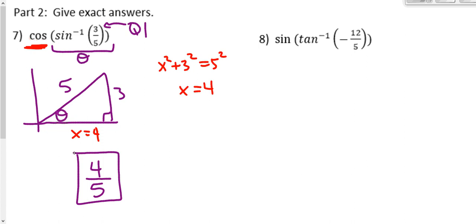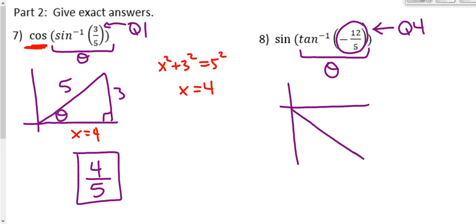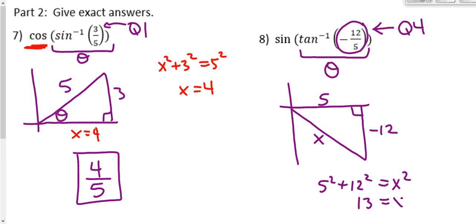Same idea for number 8. Start with the inside and call that angle theta. The ratio is negative, so for inverse tangent we're in quadrant 4. Draw a reference triangle in quadrant 4: the opposite is negative 12 and the adjacent is 5. Use the Pythagorean theorem: 5 squared plus 12 squared equals x squared, and x equals 13 — another Pythagorean triple. The sine of the angle is opposite over hypotenuse: negative 12 over 13.